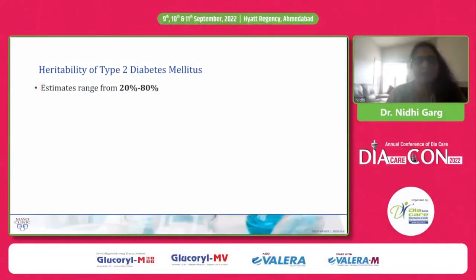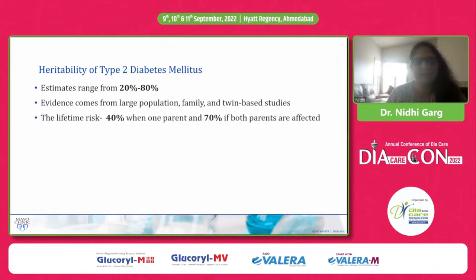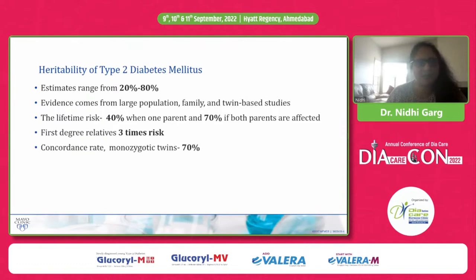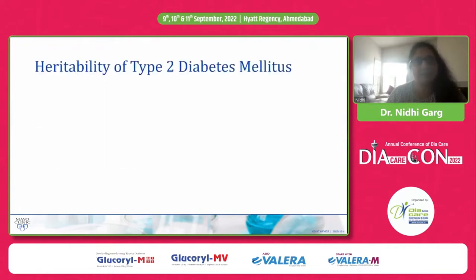The hereditary component ranges from 20 to 80 percent, and the evidence comes from large population, family, and twin-based studies. The lifetime risk is 40 percent when one parent is diabetic and 70 percent if both parents are affected. First-degree relatives have a three times increased risk of having type 2 diabetes. The concordance rate in monozygotic twins is 70 percent and in dizygotic twins is 20 to 30 percent.